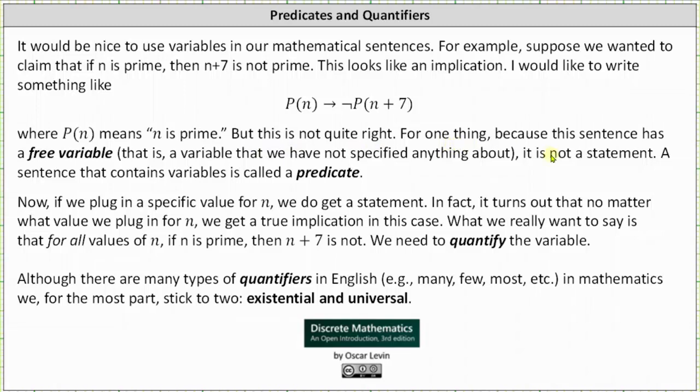But this is not quite right, for one thing, because this sentence has a free variable—that is, a variable that we have not specified anything about. It is not a statement. A sentence that contains a variable is called a predicate.